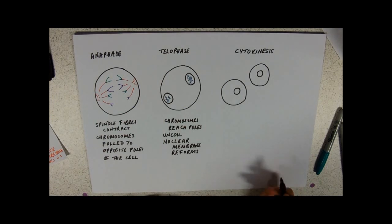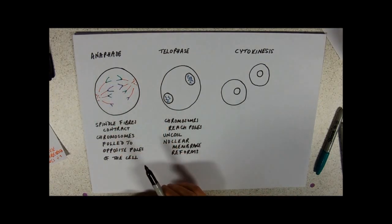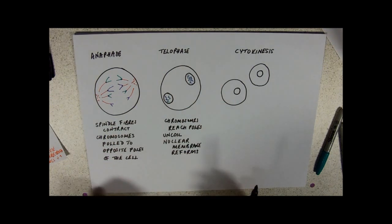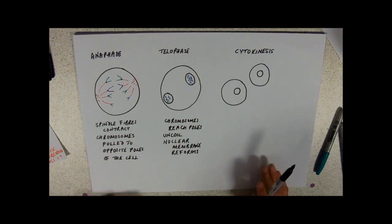And that kind of wraps it up. So the whole point is that because we've got identical chromatids forming our chromosomes, if we pull them apart, you're going to get two genetically, completely genetically identical cells.